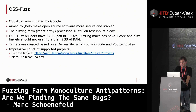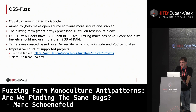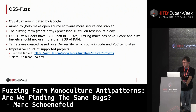OSS-Fuzz is an overarching fuzzing initiative by Google aimed to help make open source software more secure and stable. They have a fuzzing farm — a robot army — processing 10 trillion test cases a day. It uses Docker containers that pull in code and fuzzing templates and exercise the code defined in the Dockerfile. There is a list available on the OSS-Fuzz projects page. What made me look into it was that there is no BISON and no FLEX listed.